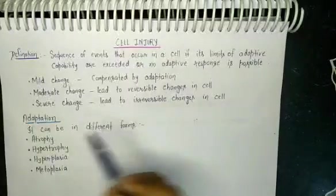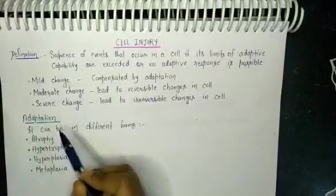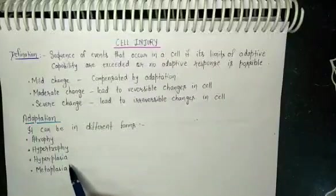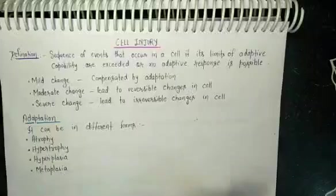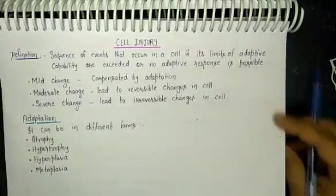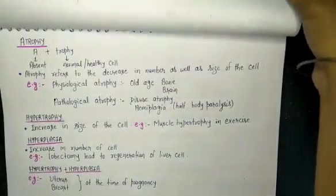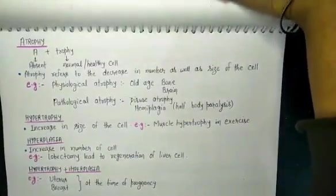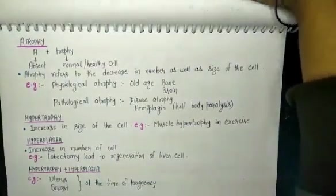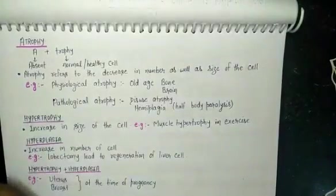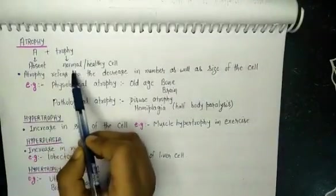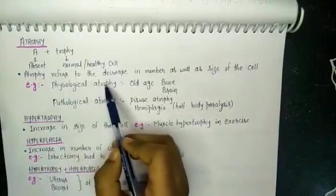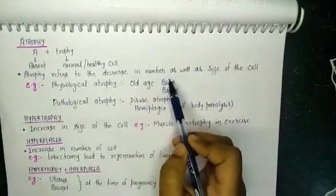Adaptation in a cell can take different forms: atrophy, hypertrophy, hyperplasia, or metaplasia. Atrophy is a combination of two words — 'a' meaning absent, and 'trophy' meaning normal or healthy cells. So atrophy refers to a decrease in size as well as number of cells.